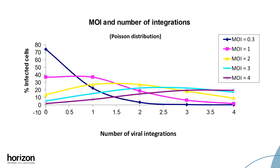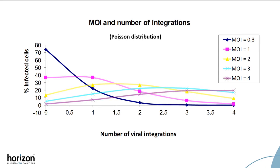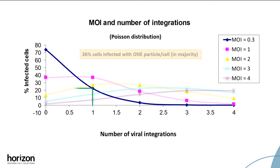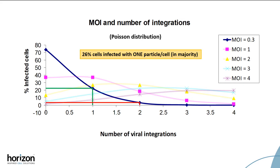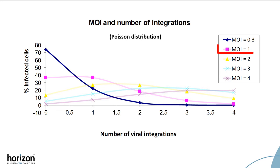We recommend using an MOI of 0.3 to maximize the number of cells receiving one viral particle, whilst also minimizing the number of cells receiving multiple viral particles. Using an MOI of 0.3 results in roughly 26% of the cells being infected with a single viral particle, and a very small percentage of cells having more than one particle, unlike an MOI of one where roughly 20% of your cells may have two viral particles.